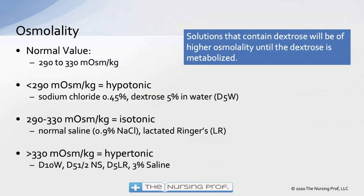The normal value for osmolality is approximately 290 to 330, though this varies by lab — some use 290 to 300 or 295 to 305, so check your lab's reference range. Hypotonic fluids are those below 290; isotonic fluids fall between 290 and 330, including normal saline and lactated Ringer's; and hypertonic fluids are above 330, including D10, D5 and a half, D5LR, or 3% saline.